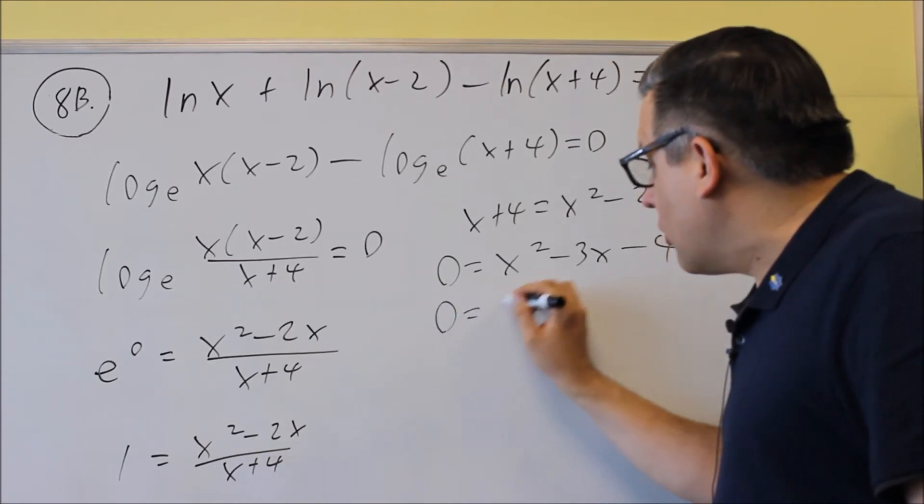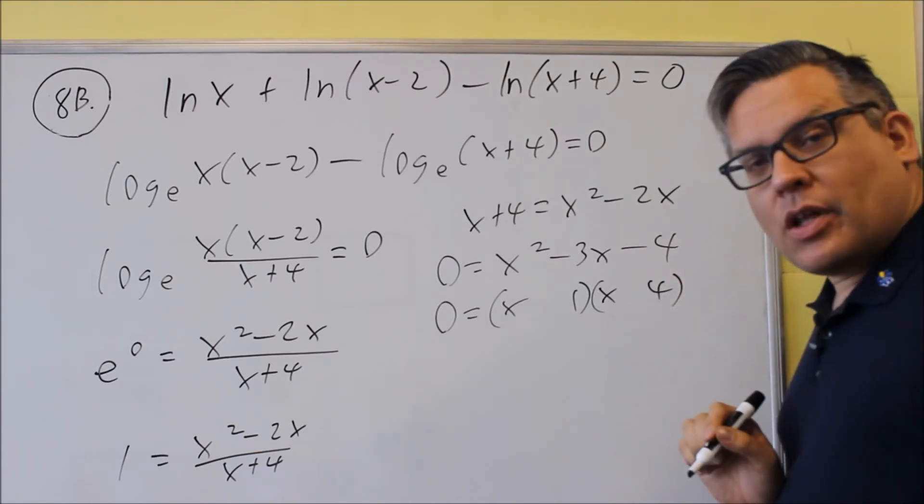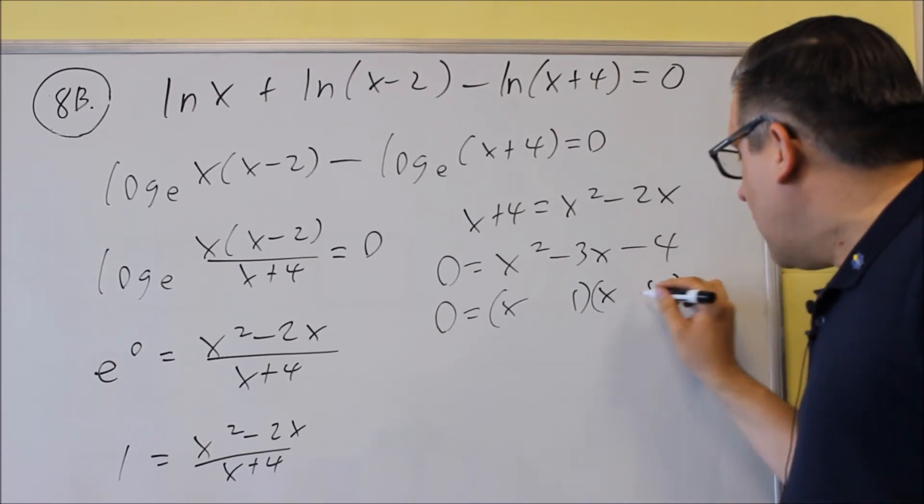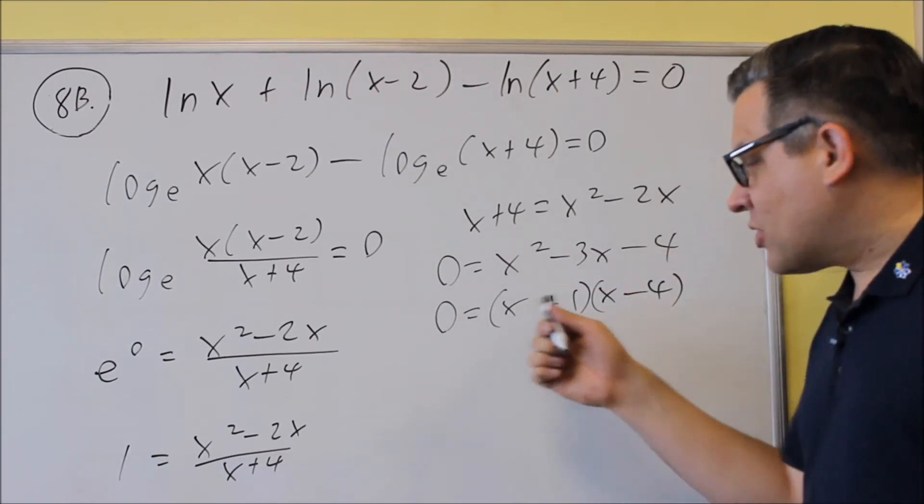We're going to factor the remaining one. So when we factor that one, we have a 1 and a 4 that we're going to use. And one's positive and one's negative. We're going to do a negative 4 and a positive 1 to get the negative 3. And we set that equal to 0.